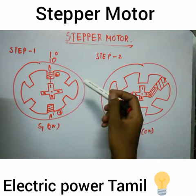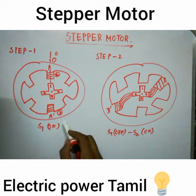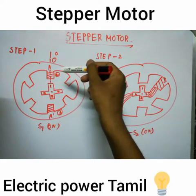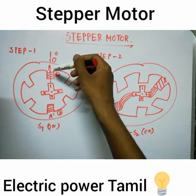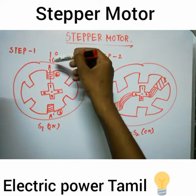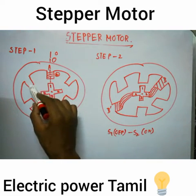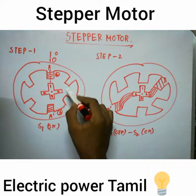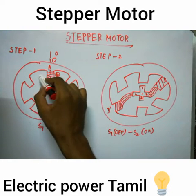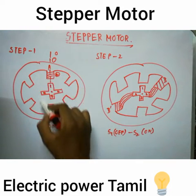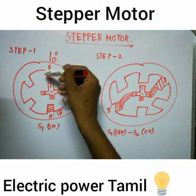Now let's look at the diagram. Step 1 is S1 — S1 is A phase energized. The energized condition is on; the de-energized is off. A phase is energized, which is the on condition. The north pole is formed with this energization.